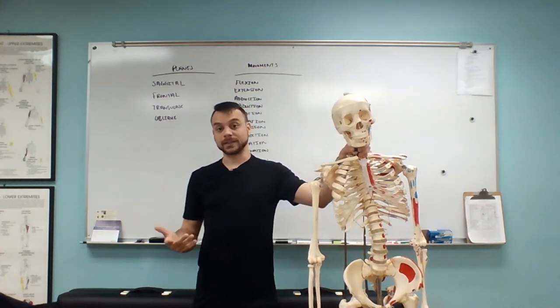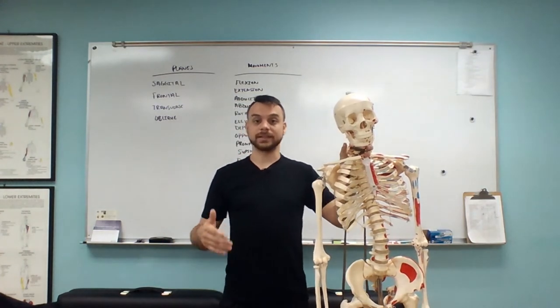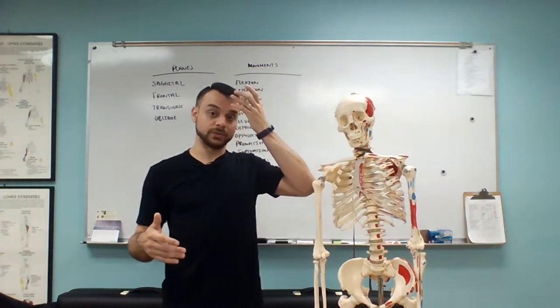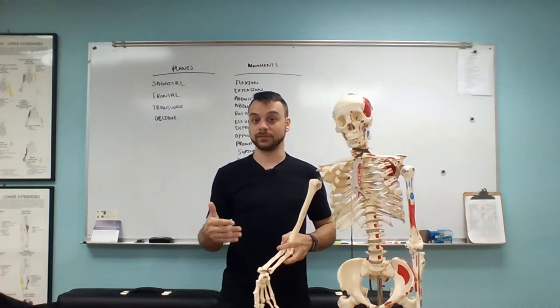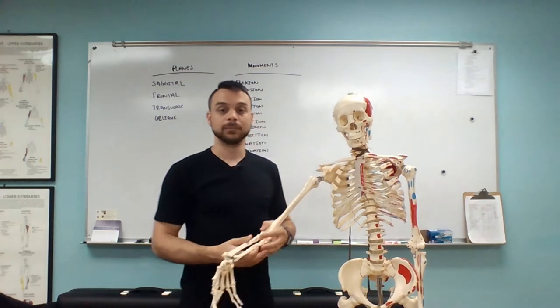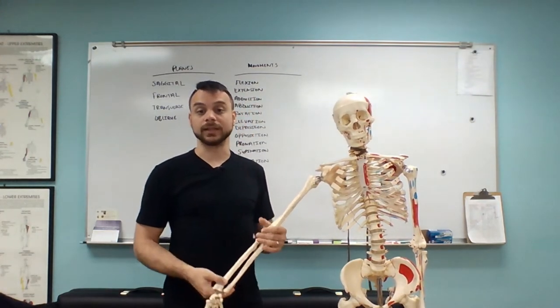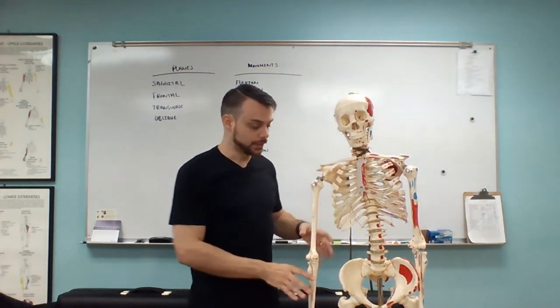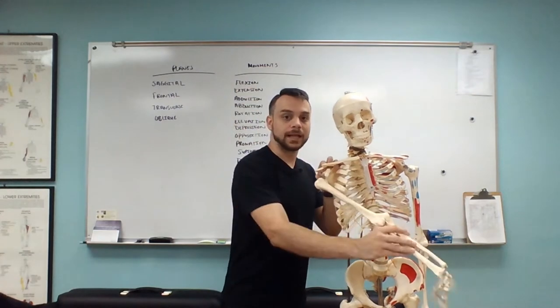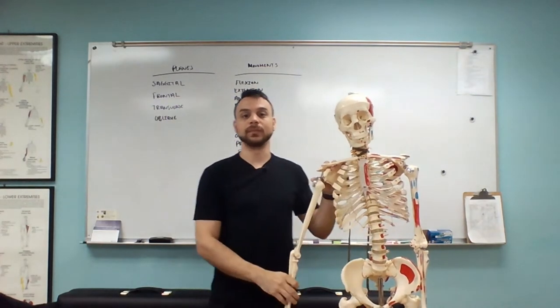The next plane is a very interesting one because there's no real specificity as to which degree or angle the movement occurs — the angle can be quite varying. This plane occurs at an angle and it's oblique. Just like we have oblique muscles in our abs that run at angles, the oblique plane allows for this angular movement.